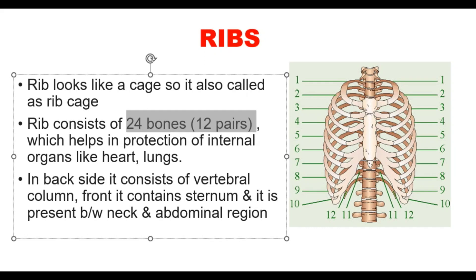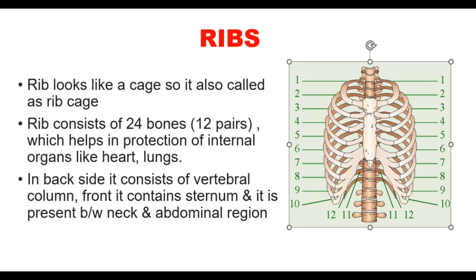The rib cage helps in the protection of internal organs like the heart and lungs. In the backside it consists of the vertebral column, and in the front it consists of the sternum. The sternum is present between the neck and abdominal region.